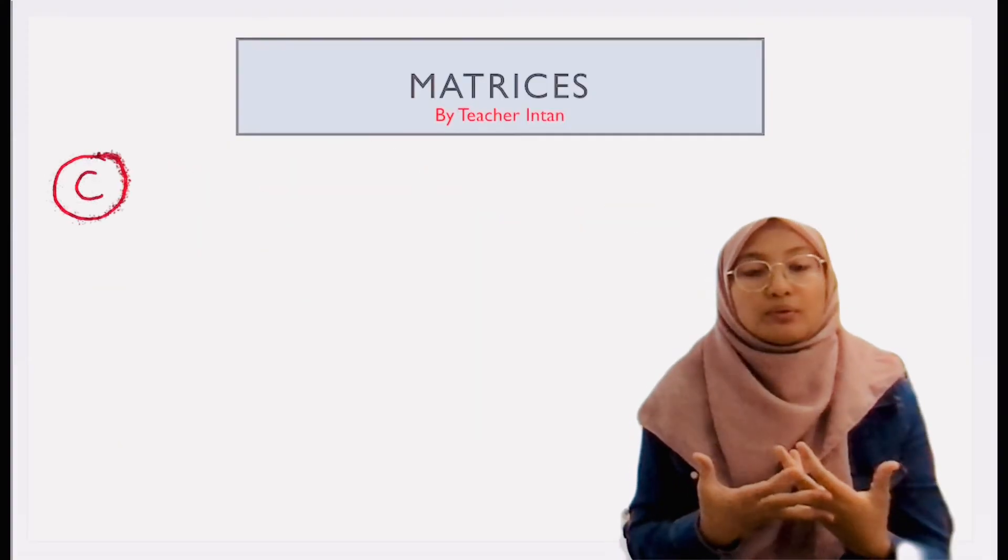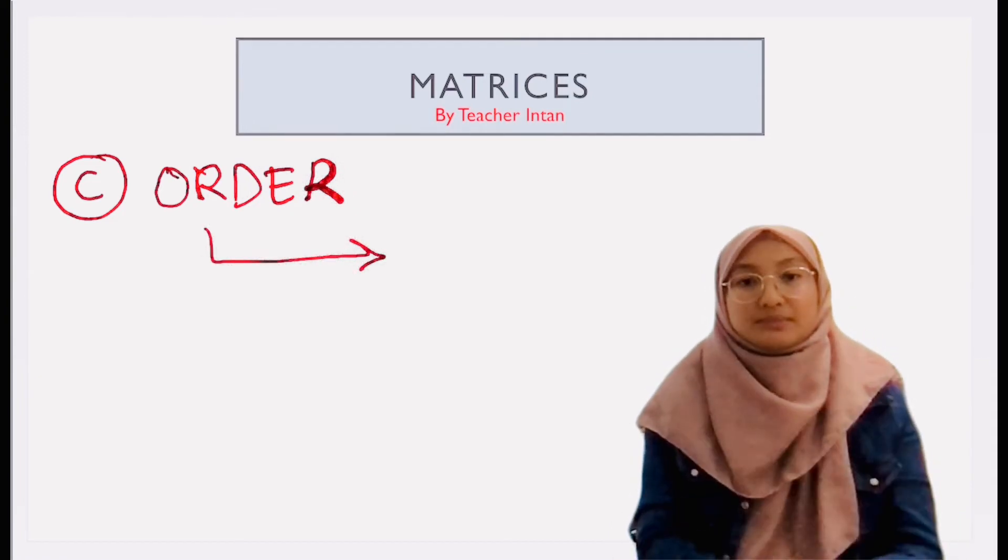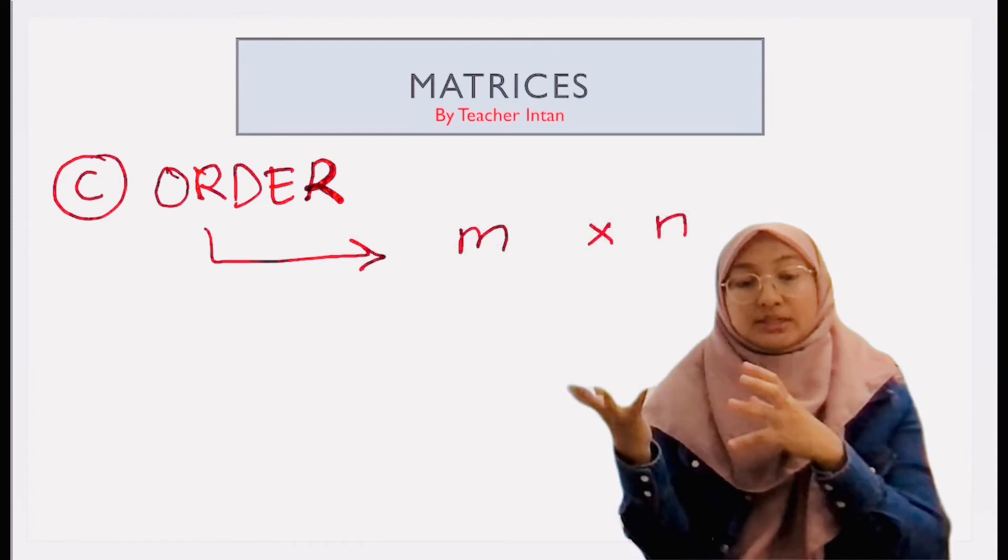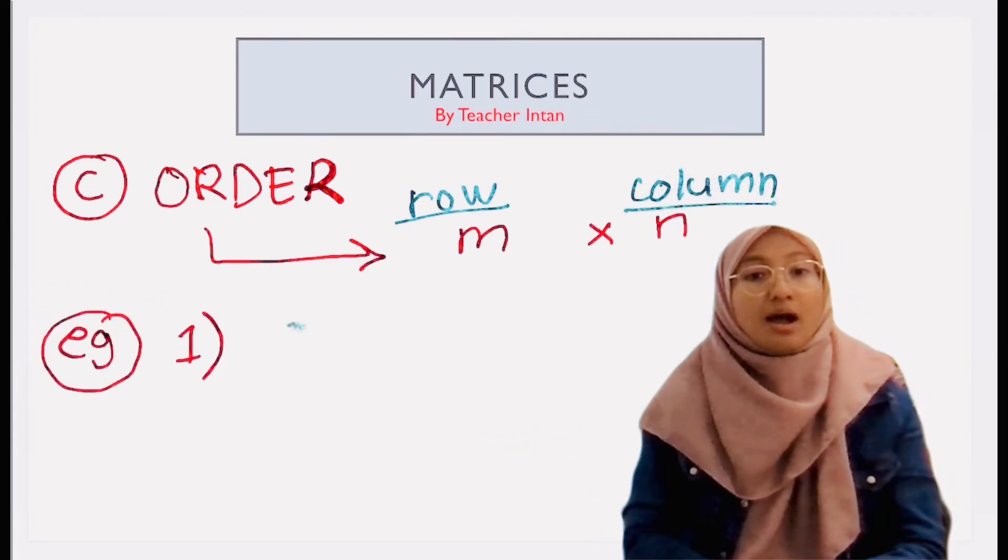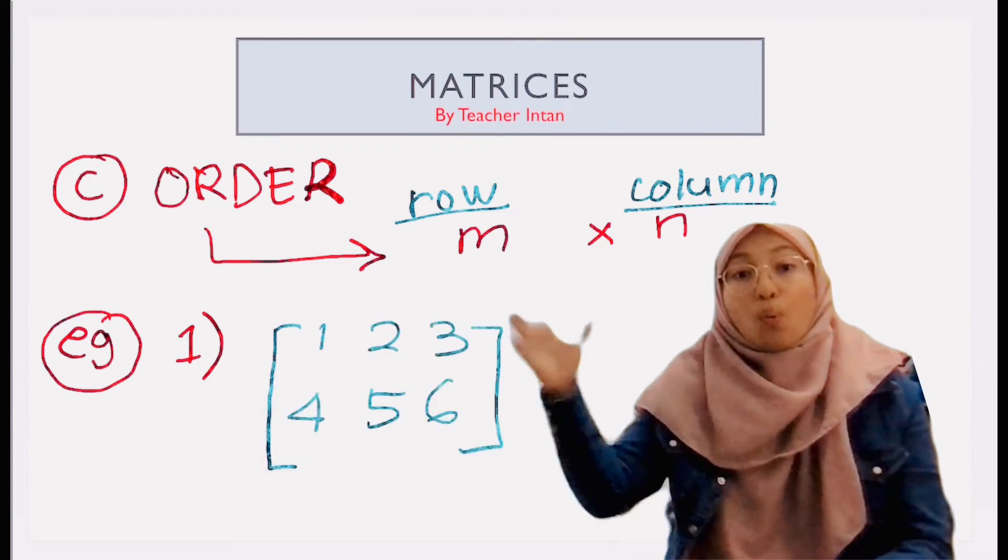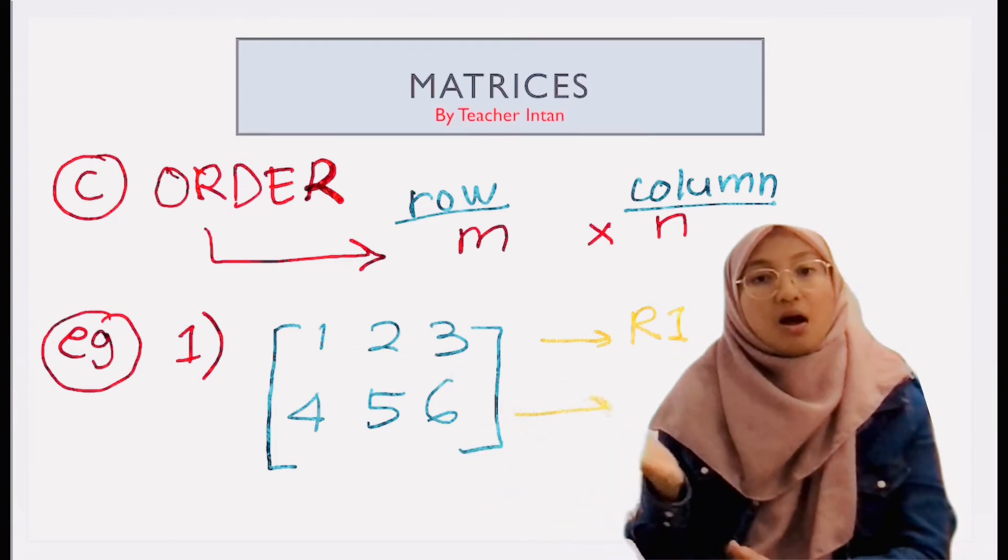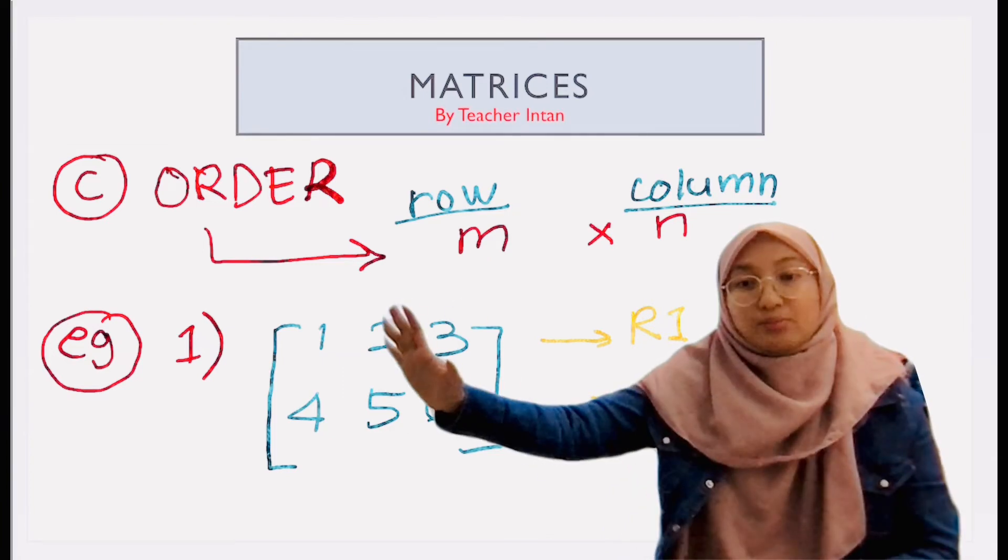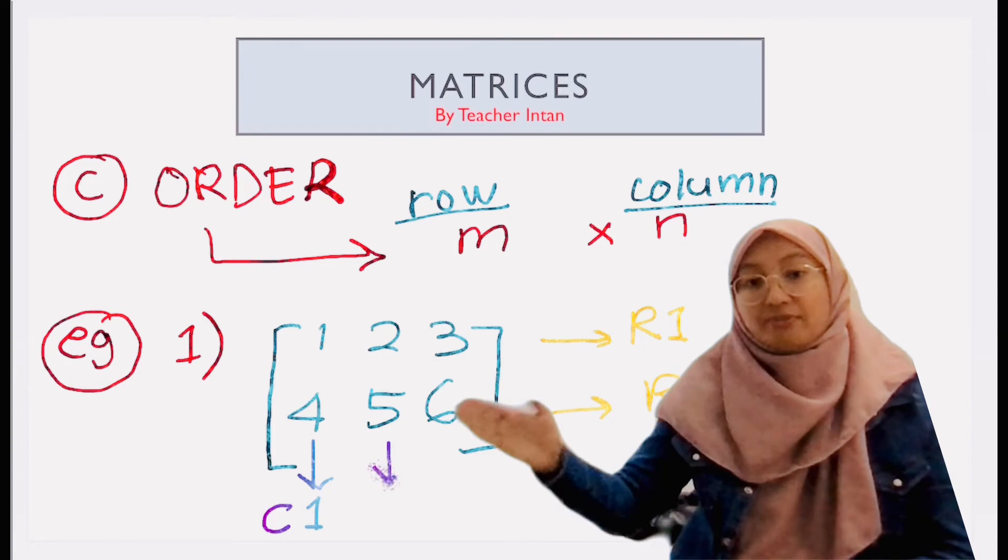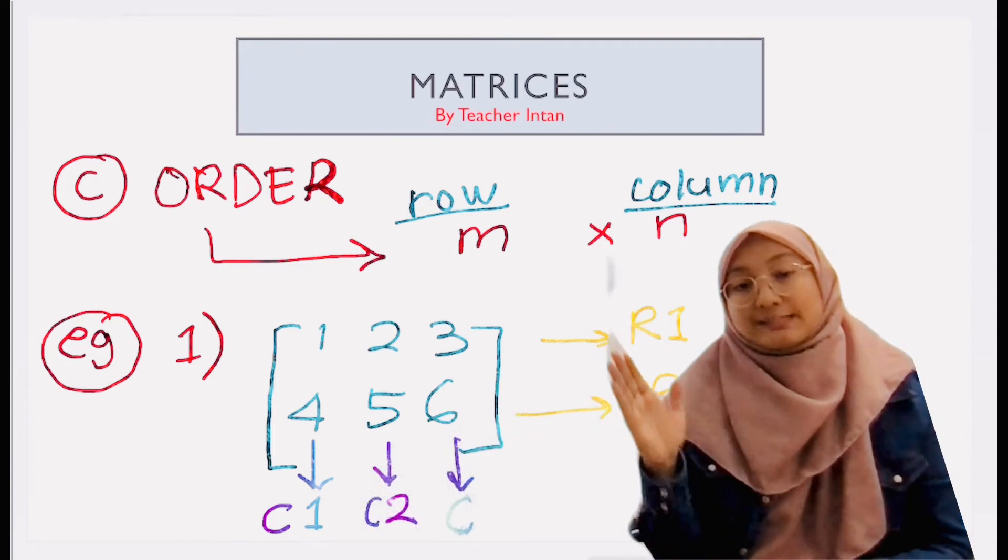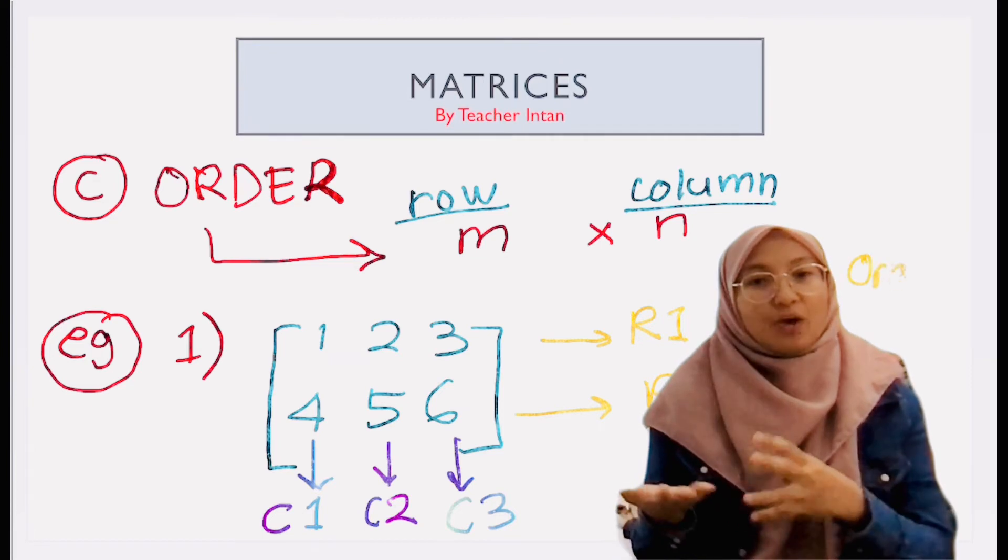Next, we learn about order of a matrix. So what is order? Order of a matrix tells us how many rows and columns the matrix have. To write down order, we must write down row times columns. So you can see the example here. I have a matrix. 1, 2, 3 are in row 1. Do you remember about row? Horizontally. And 4, 5, 6 are in row 2. Then we see at the column. We have number 1 and 4 is in column 1. 2 and 5 is in column 2. And 3, 6 are in column 3. So, can you see how many rows and how many columns we have here?